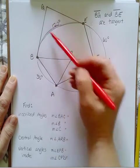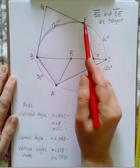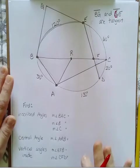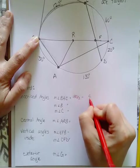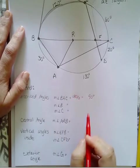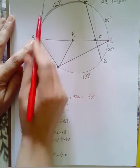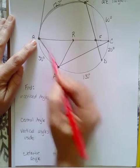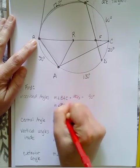So here is my big circle, and I have this whole picture for circle R. BC is the diameter. The other things that I have - I have point G here in the exterior, and I made a little note that BG and GE are tangent. Okay, so all the angles that I want to find, let's start with some inscribed angles.